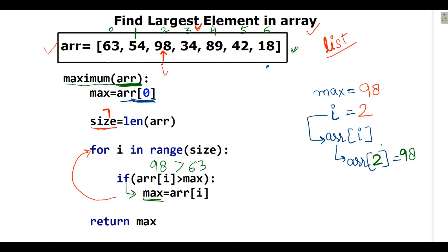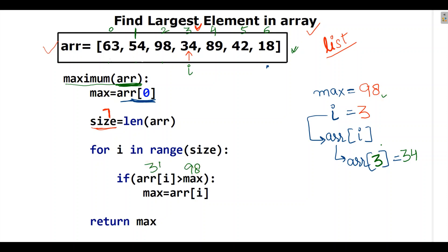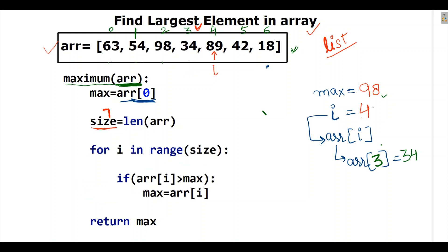For i equal to 3, the array value at index 3 is 34. Max is 98 and ARR[3] is 34 — is 34 greater than 98? No, so it won't go inside the if condition. For i equal to 4, ARR[4] is 89. We check: is 89 greater than 98? No, so again it won't enter the if condition.